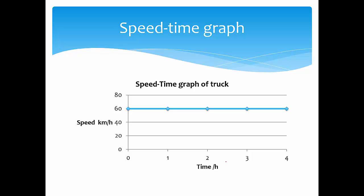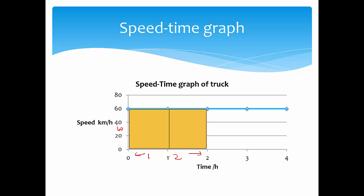Graphically, if we plot the speed-time graph for this truck, it is simply a constant 60 km per hour over 4 hours. The reason I structured the previous table is to help you understand that the distance for 1 hour is 60 multiplied by 1 — you get this area. For 120, it is 60 multiplied by 2, and so on: 60 multiplied by 3 is 180, and 60 multiplied by 4 is 240.